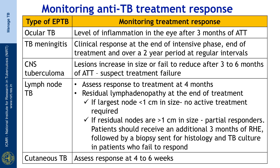For CNS tuberculoma, you should see a good response within 3 to 6 months. You follow up with CT or MRI looking at whether the size of the tuberculoma is reduced, and whether the inflammation or edema is reduced, and the patient is not having sequelae like epilepsy or monoparesis. For lymph node TB, a node can persist even after 6 months of therapy, but depending upon the size and site we can decide whether the response is good.